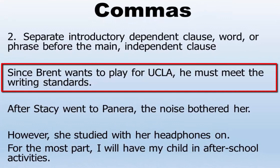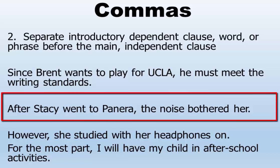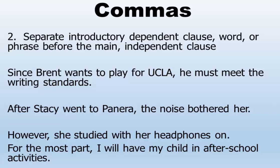Let's look at the examples. 'Since Brent wants to play for UCLA, he must meet the writing standards.' 'Since Brent wants to play for UCLA' is at the beginning before the independent clause, and it cannot stand alone as a sentence. This means it is an introductory dependent clause — place a comma after it. Then it is followed by an independent clause: 'He must meet the writing standards.' Another example: 'After Stacy went to Panera, the noise bothered her.' 'After Stacy went to Panera' cannot stand alone as a sentence. It is an introductory dependent clause before the independent clause 'The noise bothered her.' There must be a comma between them.